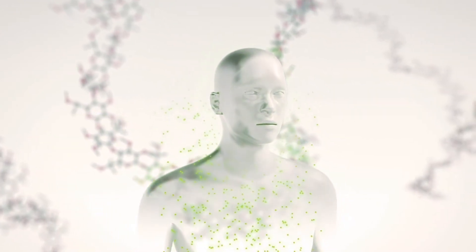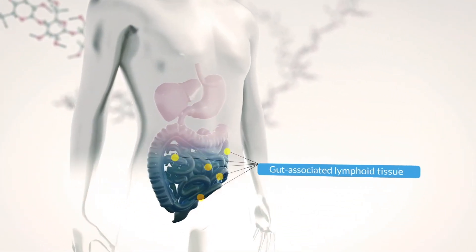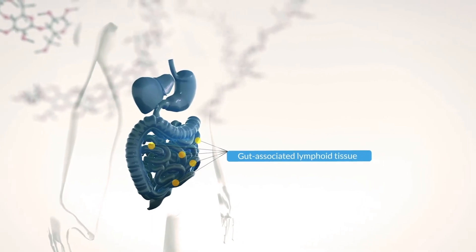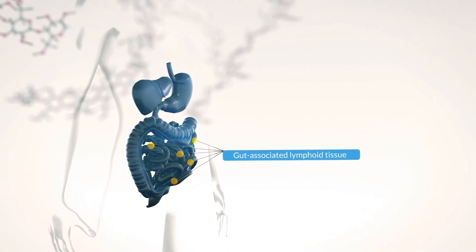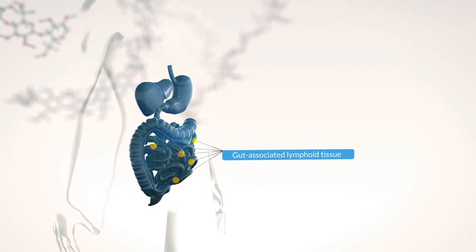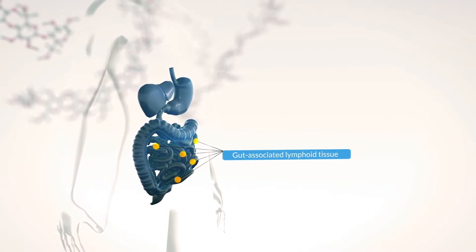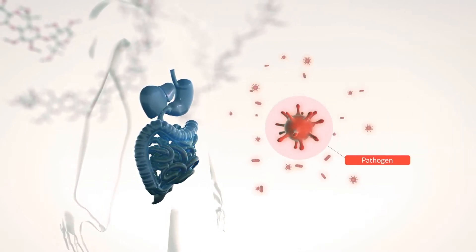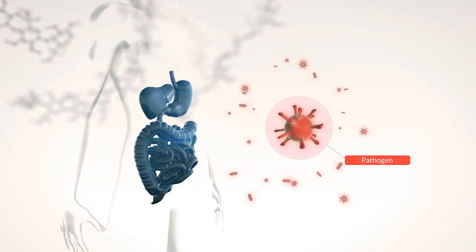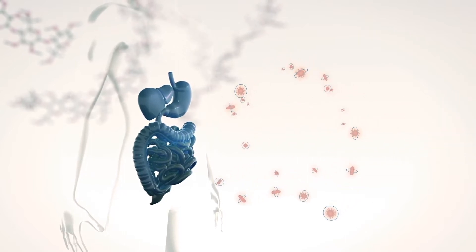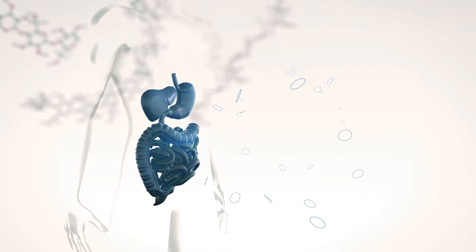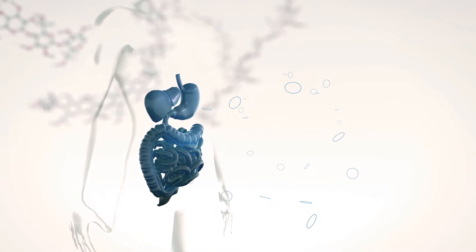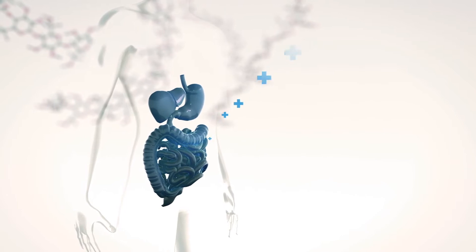The gut-associated lymphoid tissue is the largest organ of the body's immune system. It plays a central role in the body's defense against disease-causing agents known as pathogens. It recognizes these pathogens and then marks and destroys them. It also stores information on any foreign substances, thereby improving its ability to react faster the next time.